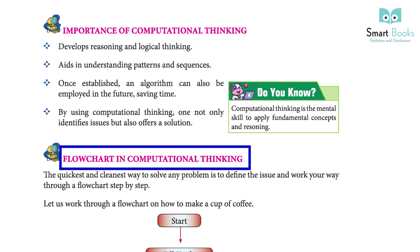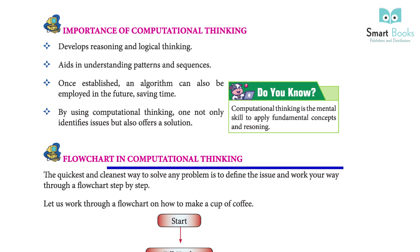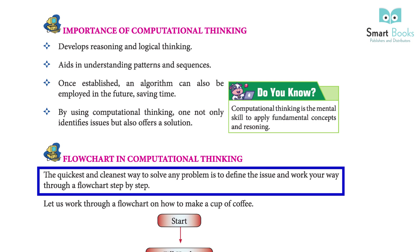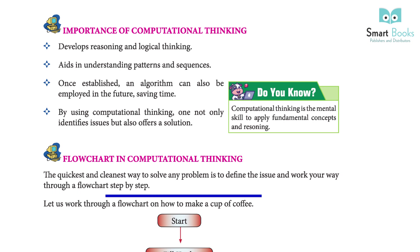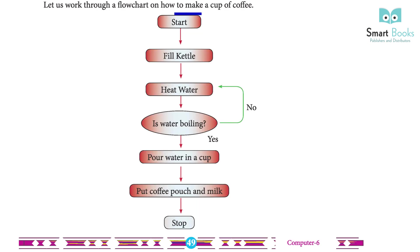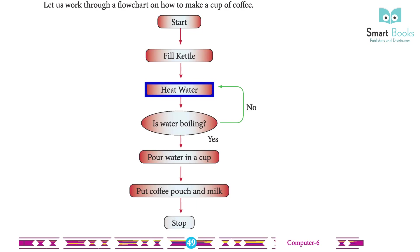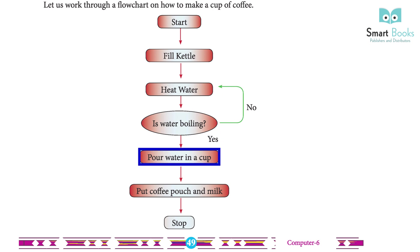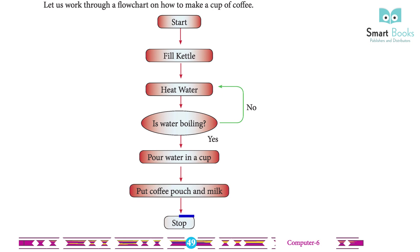Flowchart in computational thinking: the quickest and cleanest way to solve any problem is to define the issue and work your way through a flowchart step by step. Let us work through a flowchart on how to make a cup of coffee: Start → Fill kettle → Heat water → Is water boiling? → Pour water in a cup → Put coffee pouch and milk → Stop.